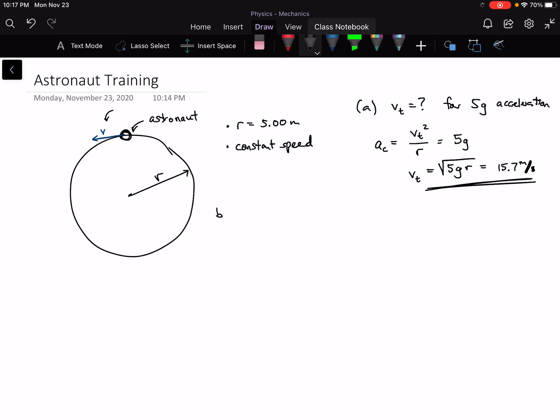So for part b, we're asked, what is the angular velocity that corresponds to this tangential velocity? This is a do you know how to use this tool kind of question. And angular velocity is related to tangential velocity in this way, right? That's the equation.